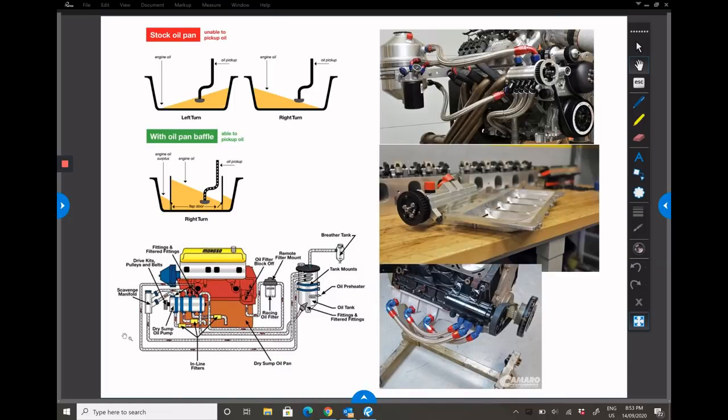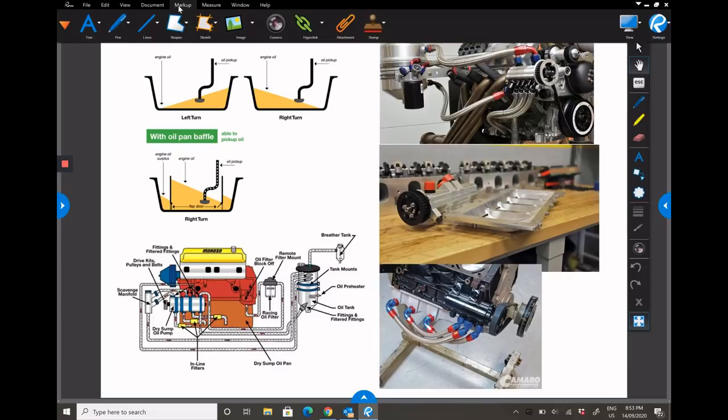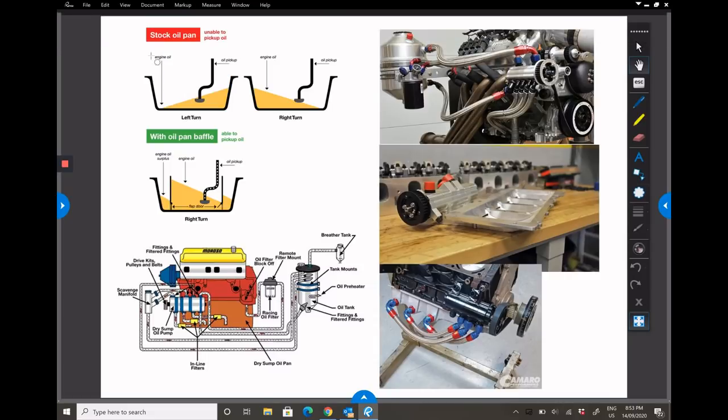If we look at the top left here, you can see there's a diagram of a stock wet sump system. When you go around a corner, you end up with the oil tapering up to the side of the oil pan. In the worst case, you can have the oil pickup itself being out of the oil, and obviously in that instance you're not going to have any oil running to the engine because the pump can't suck it up and deliver it. What you can do to improve that is run what you call a baffled oil pan, which basically has a set of obstructions in it that will avoid all the oil running away from the pickup point.